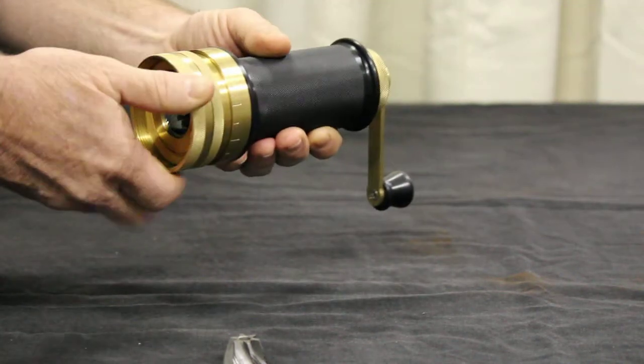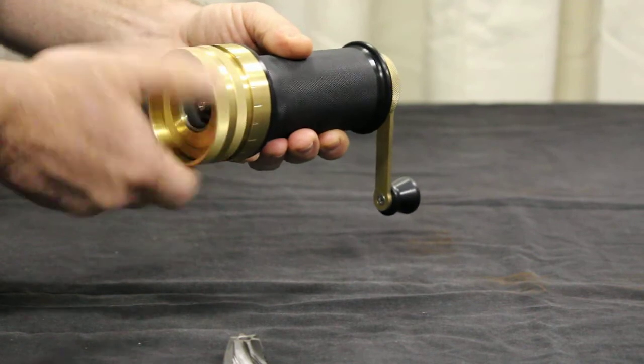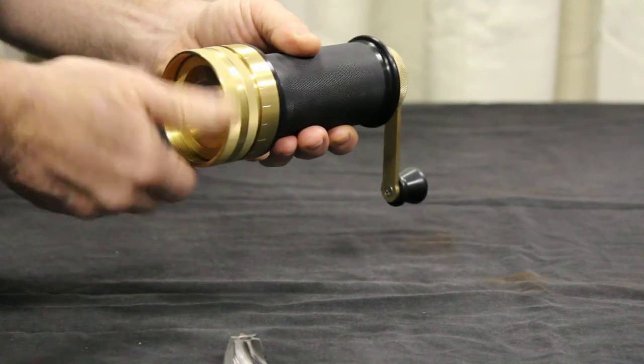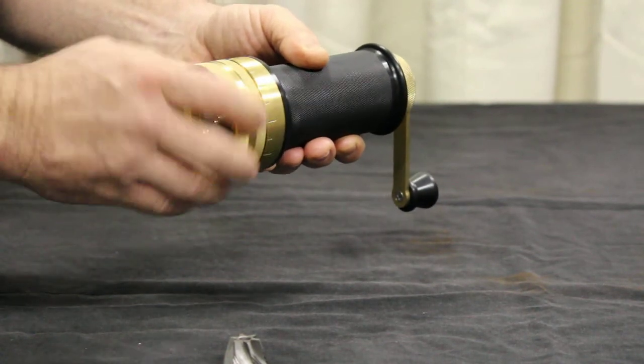Like I say, the male cutter half is fixed, the female adjusts in and out to get your grind size.